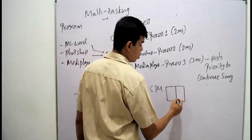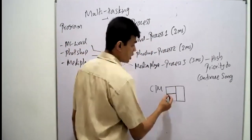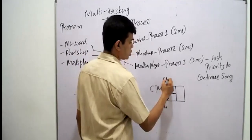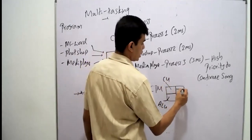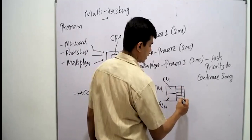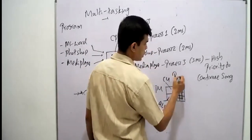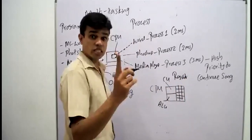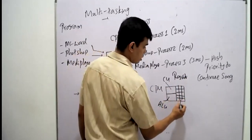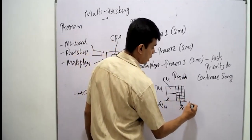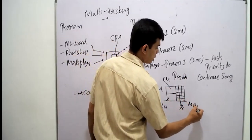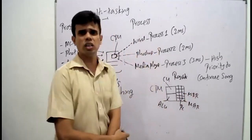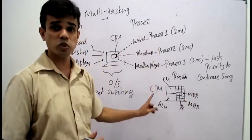The CPU has sub-components: the ALU, the control unit, and registers. We have registers at different levels — remember we have the Program Counter, MAR, MBR, and many more types of registers.